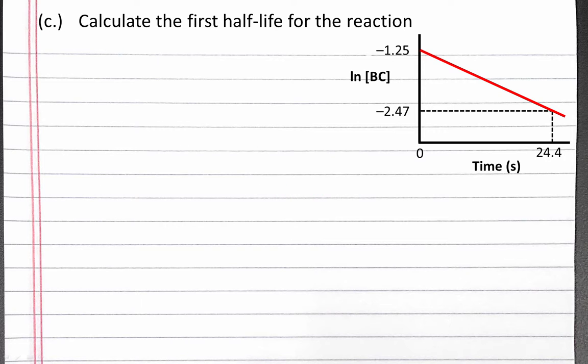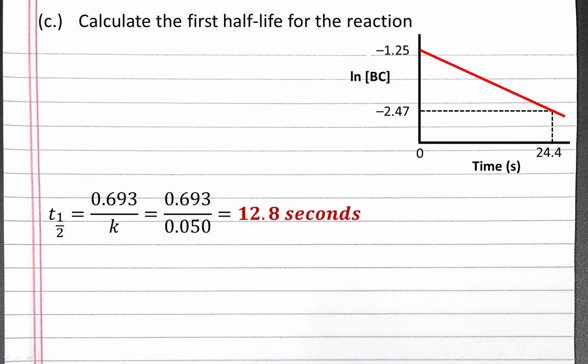Next, we'll calculate the first half-life for the reaction. Our equation for the half-life of a first-order reaction is T½ equals the natural log of 2, or 0.693, divided by K, our rate constant. This comes out to be 12.8 seconds. Since this is a first-order reaction, every half-life is 12.8 seconds.